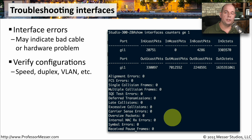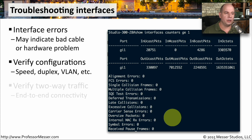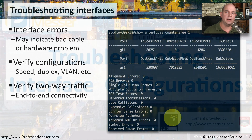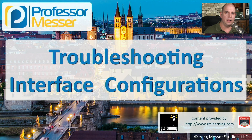You might also want to confirm what the speed, duplex, VLAN settings, and all other configuration options are for that interface, and make sure they match the device on the other side. Then you can start performing two-way traffic communication — see if you can communicate to other devices on your local subnet, communicate to your default gateway, and then try communication out to the internet.